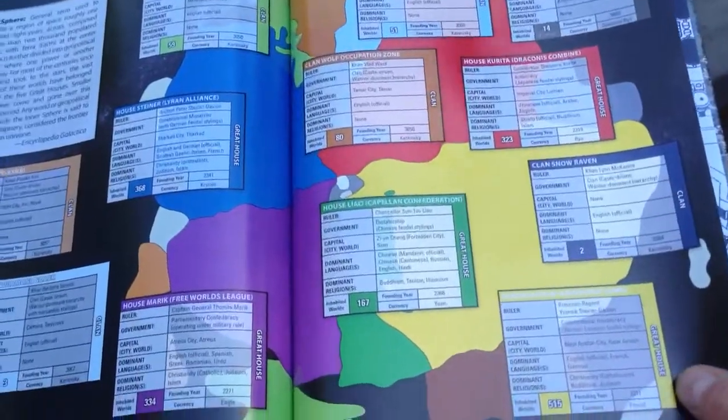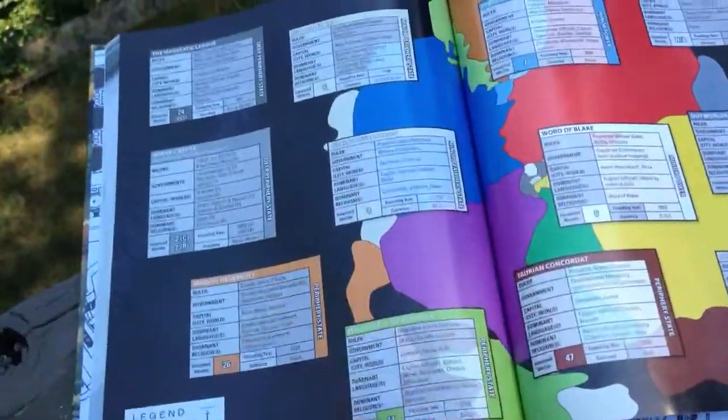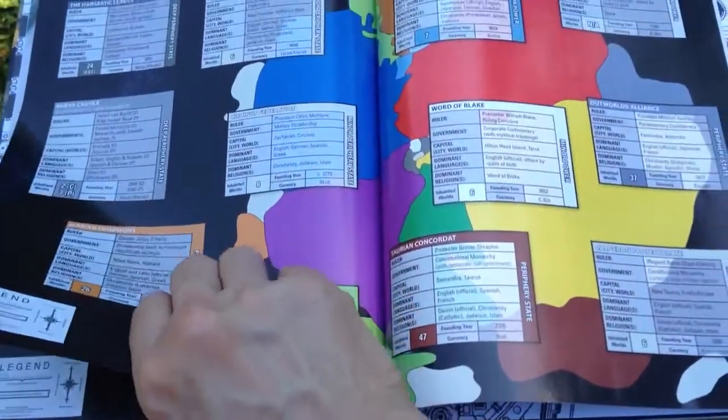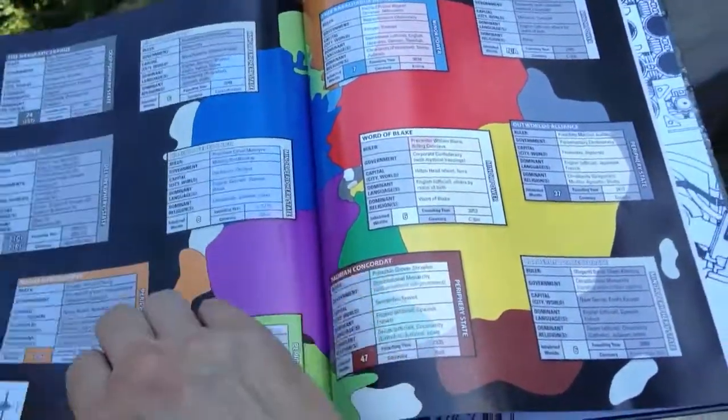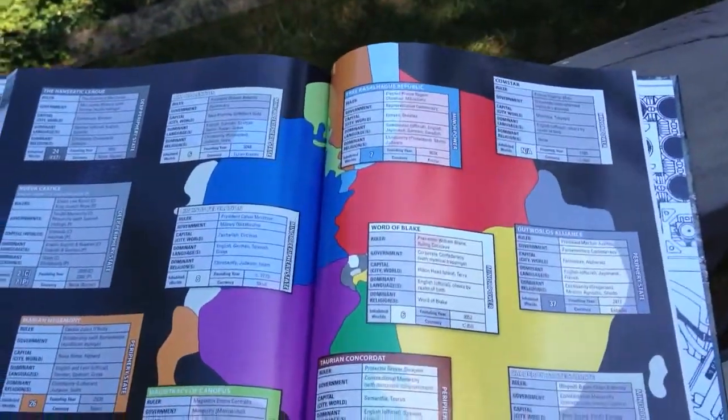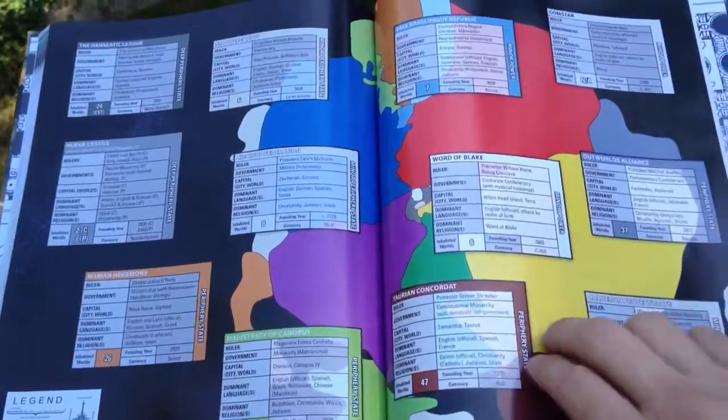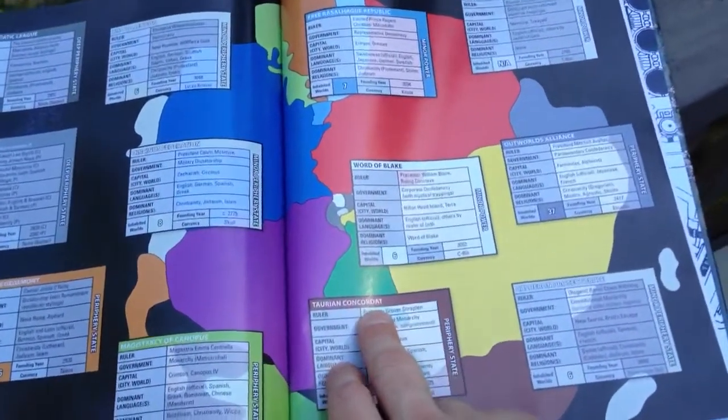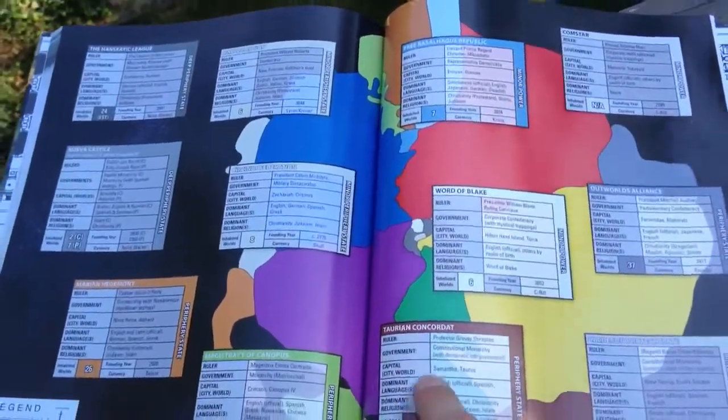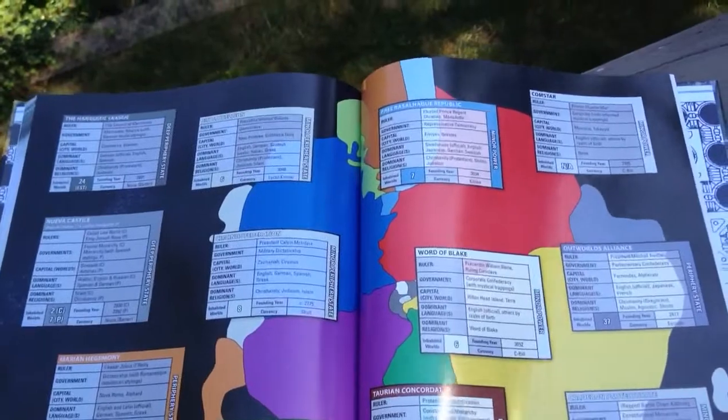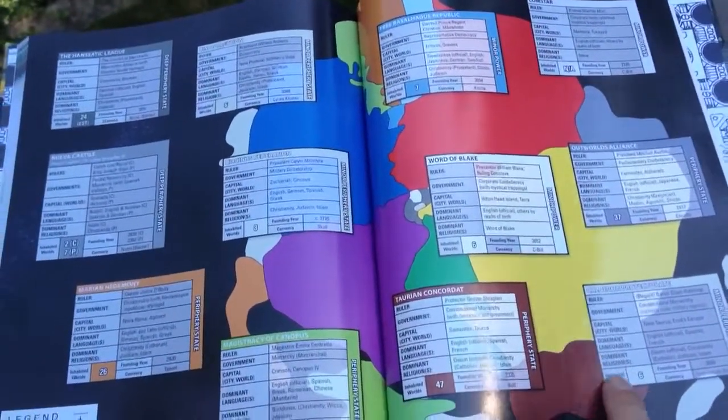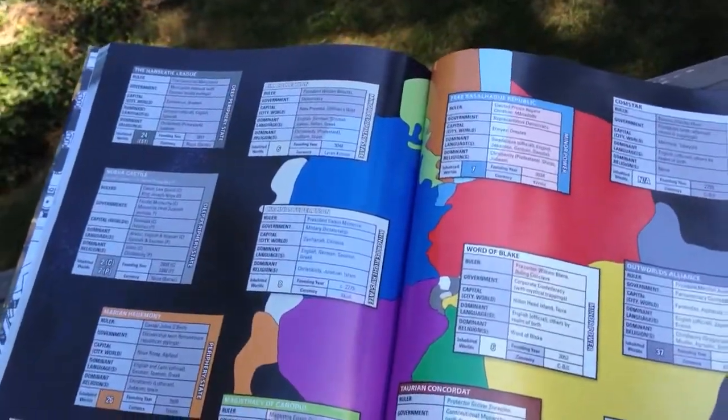Clan Snow Raven. That's interesting. Anyway. These are other people that are taking part. Like Outworld's Alliance. I need to read about these Taurian Concordats. Because it's a concordat. I'm not really sure what that means. I guess that's here. I'm glad to see this. Because I'm reading a book right now that talks a lot about Taurian. Or however you say that.